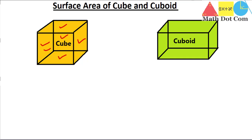If you are given a square and asked to find its area, keep in mind that a square is a 2D shape. The cube is made up of six such squares, so if we find the area of one square we can find the surface area of the cube.